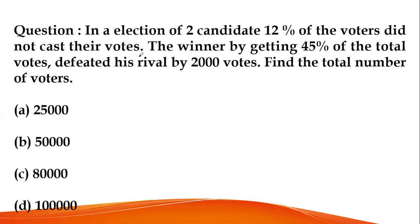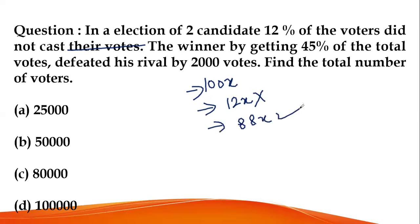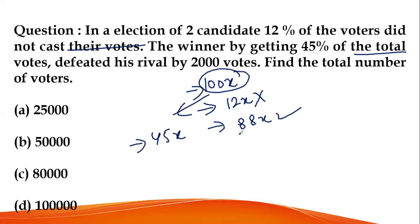In an election between two candidates, 12% of voters did not cast their votes. If total votes = 100x, then 12x voters did not vote, leaving 88x valid votes. The winner got 45% of total votes, which is 45x. The remaining valid votes for the loser are 43x.